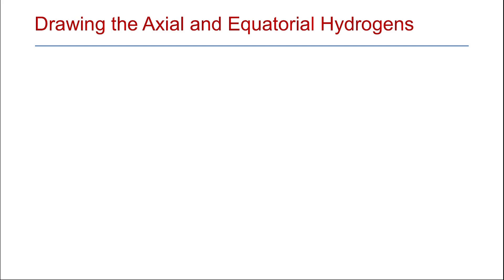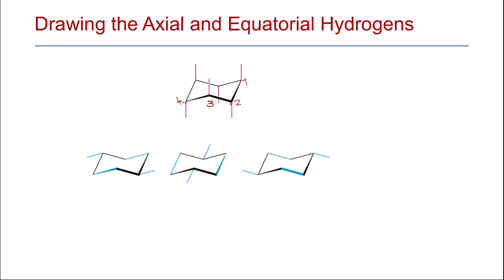To draw the axial and equatorial hydrogens: start by drawing the axial hydrogens — on carbon number one, draw the axial hydrogen pointing upward; on carbon number two, draw it pointing downward. These two are in two different planes. Continue alternating upward and downward: carbon number three pointing upward, carbon number four pointing downward, and so on. Then draw the equatorial ones, which are slightly tilted on the different carbon atoms. In the final shape, the red bonds are axial and the blue ones are equatorial.